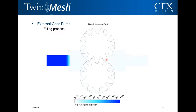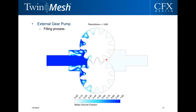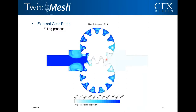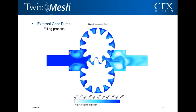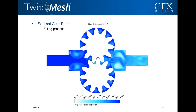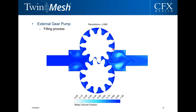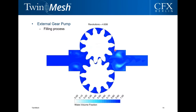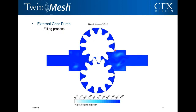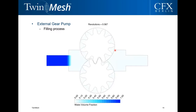This example shows a filling process of an external gear pump, starting with only air and then filling up with water over time. You can see vortices forming in the corners of the stator. Even in a simple generic model like this, you can analyze flow patterns within certain regions of the pump and identify areas for improvement.